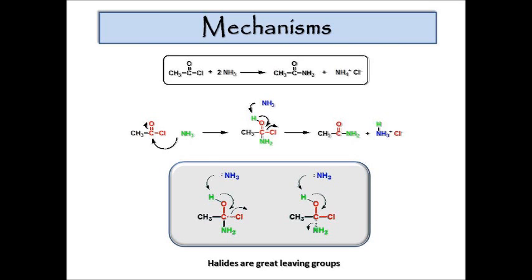This box demonstrates the difference in leaving groups. If the ammonia were to come in, grab the hydrogen, and collapse the tetrahedral intermediate, it can either kick out the chloride or kick out the ammonia. Obviously we know it's not going to kick out the nitrogen because that would give us the initial product, which wouldn't make any sense. Chlorine leaves because it's such a good leaving group — good leaving groups are groups that can stabilize a negative charge very well. When the chloride kicks out as Cl⁻, it stabilizes that much better than an NH2 would.